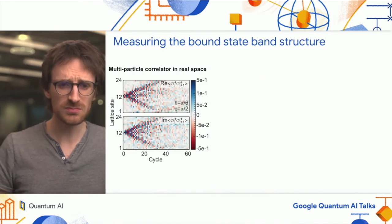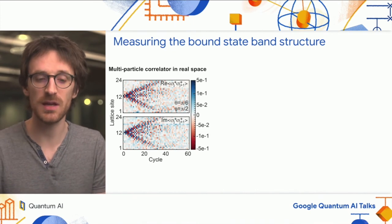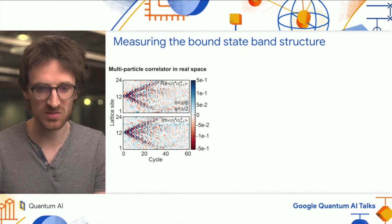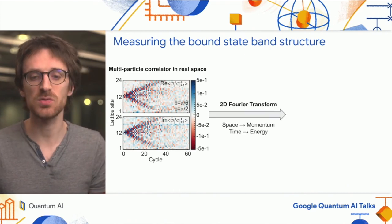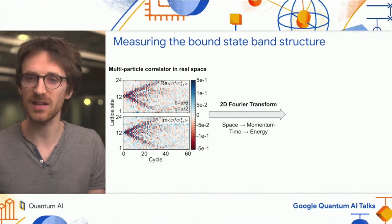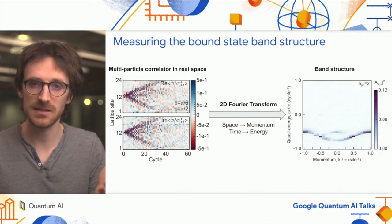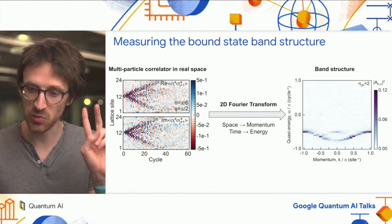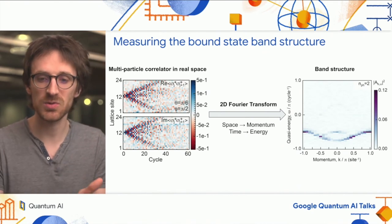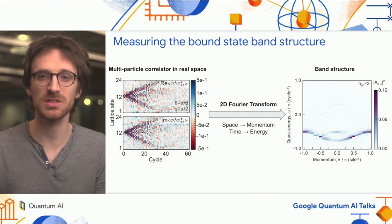This is what we see in real space and real time. For the two-photon case, we find the cone of the two-photon bound state. If we do the 2D Fourier transform on this data—transforming space into momentum and time into energy—we find a plot that reveals exactly the energy-momentum relationship of the two-photon bound state. This is already quite remarkable.